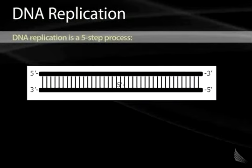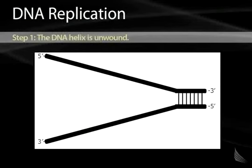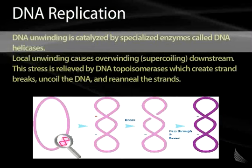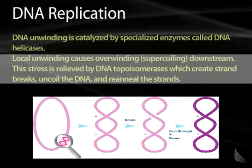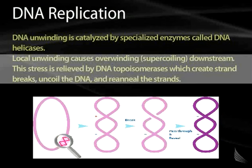DNA replication itself is a five-step process. The first step is the unwinding of the DNA helix — the hydrogen bonds which bind the nucleotides together have to be broken, allowing access of the replication machinery to the DNA. DNA unwinding is catalyzed by specialized enzymes called DNA helicases. Local unwinding of the DNA can cause overwinding, or supercoiling, downstream. To prevent this, there are specialized proteins called DNA topoisomerases, which create strand breaks within the DNA and allow it to be uncoiled, after which the strands are re-annealed, preventing supercoiling downstream from a site of replication.